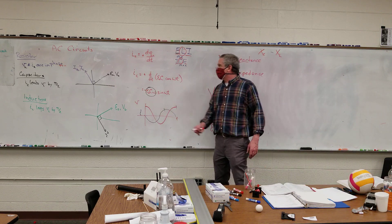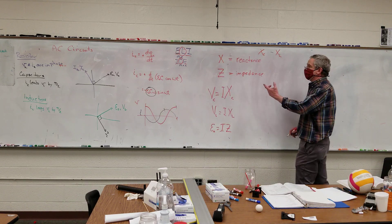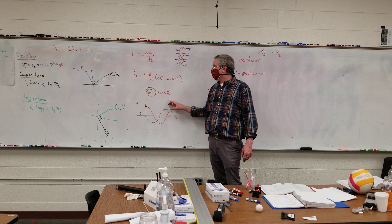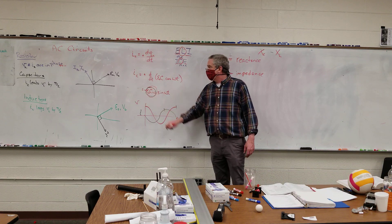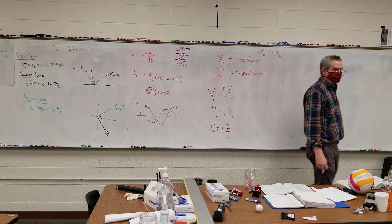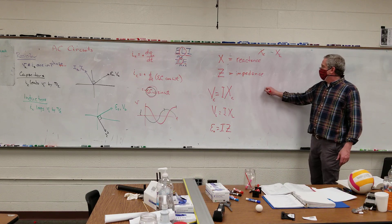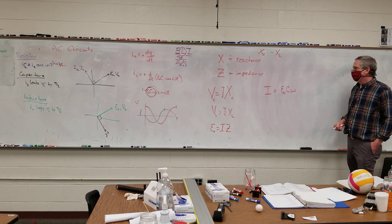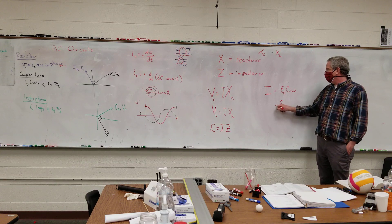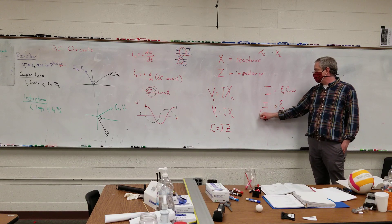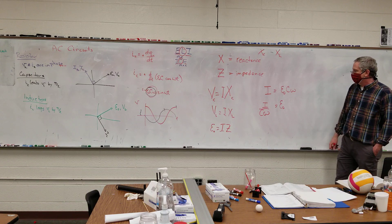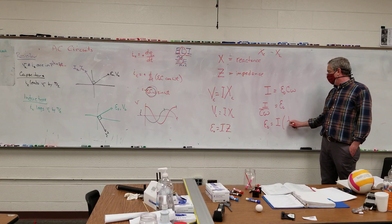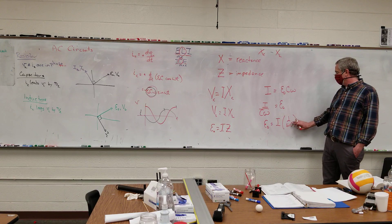So let's take a look at it. I still have this on the board here. I have that my current through my capacitor is equal to this right here — this would be the magnitude of the current, the amplitude of my current function. And so for my capacitor, I is equal to epsilon-naught times C times omega. So epsilon-naught is equal to I over C-omega, or putting it into this form, epsilon-naught is equal to I times one over omega-C. More traditionally, omega comes first.